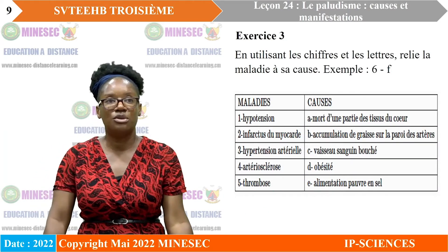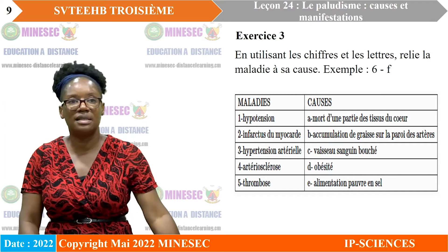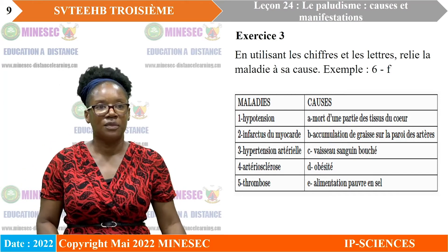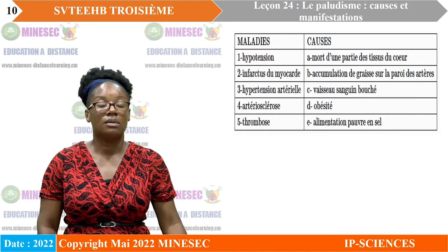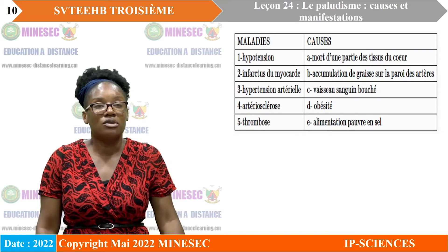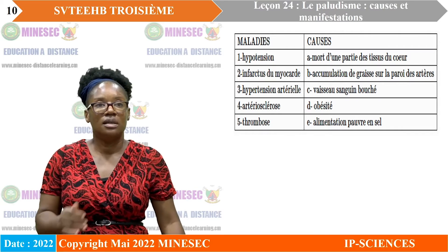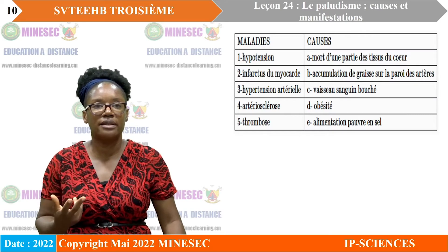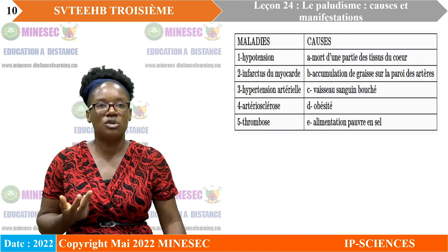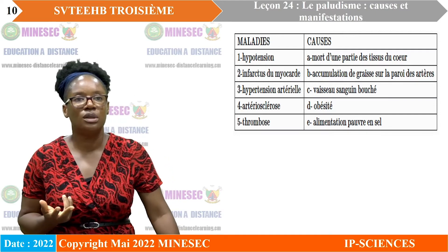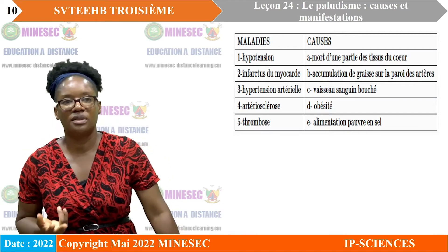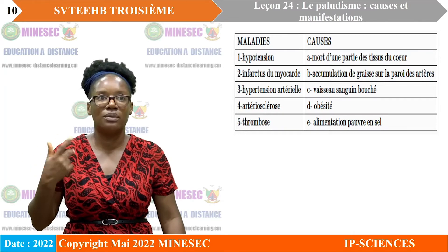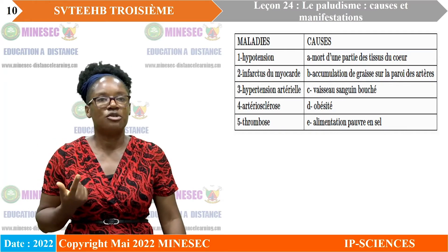Exercice 3 : en utilisant les chiffres et les lettres, reliez la maladie à sa cause. Exemple : 6F. Lorsqu'on voit l'hypertension, on cherche sa cause de l'autre côté. Une alimentation déséquilibrée peut entraîner de fausses tensions. L'infarctus du myocarde correspond à la mort d'une partie du tissu du cœur.